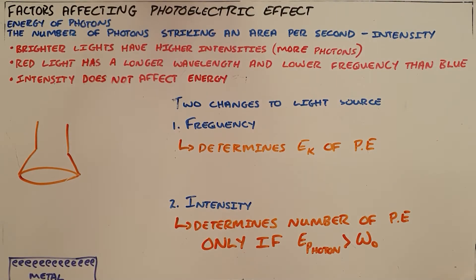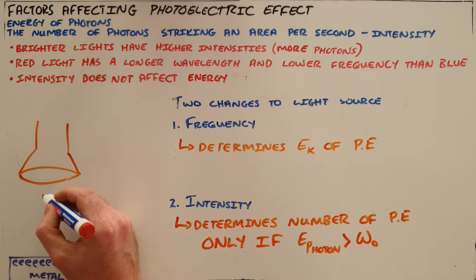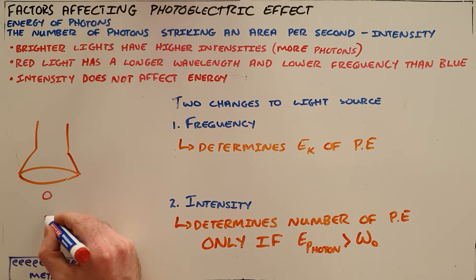There are two changes that we can make to a light source that is resulting in the photoelectric effect. The first one is that we can change the frequency of the light source, and we know that for the photoelectric effect we see light as a stream of particles called photons.